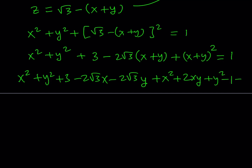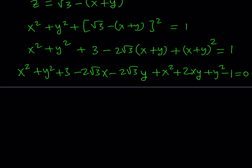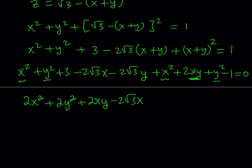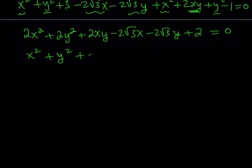Now we subtract 1 and set the whole thing equal to 0, then add like terms. We get 2x squared plus 2y squared plus 2xy minus 2 root 3 x minus 2 root 3 y plus 2 equals 0. Everything can be divided by 2, giving us x squared plus y squared plus xy minus root 3 x minus root 3 y plus 1 equals 0.